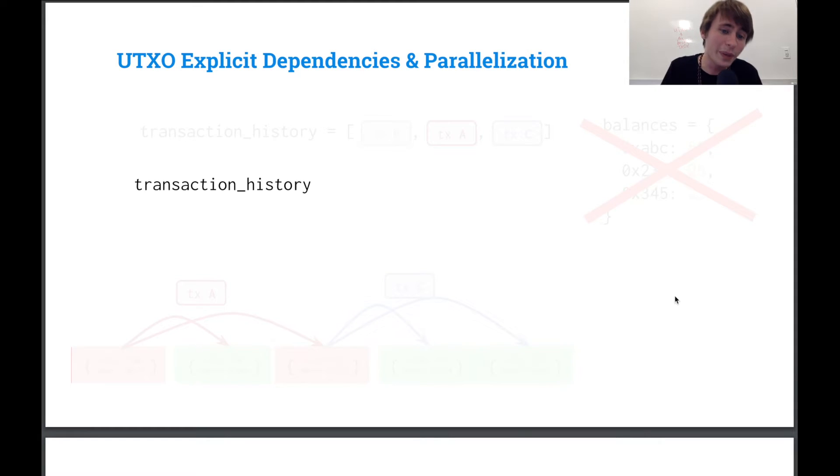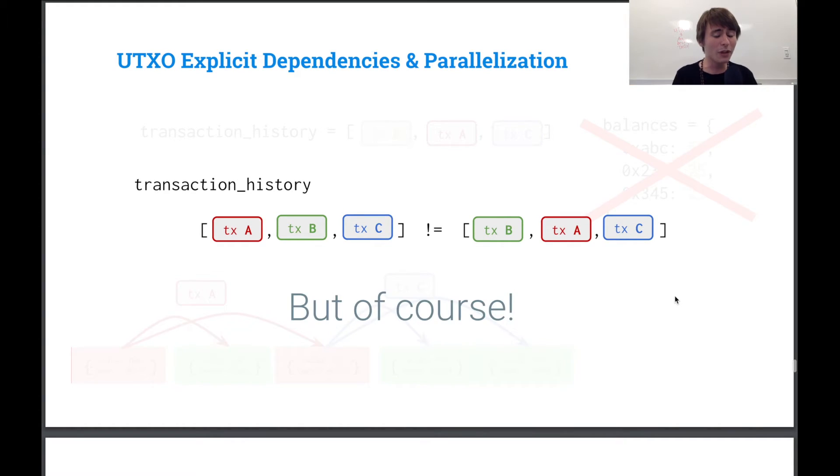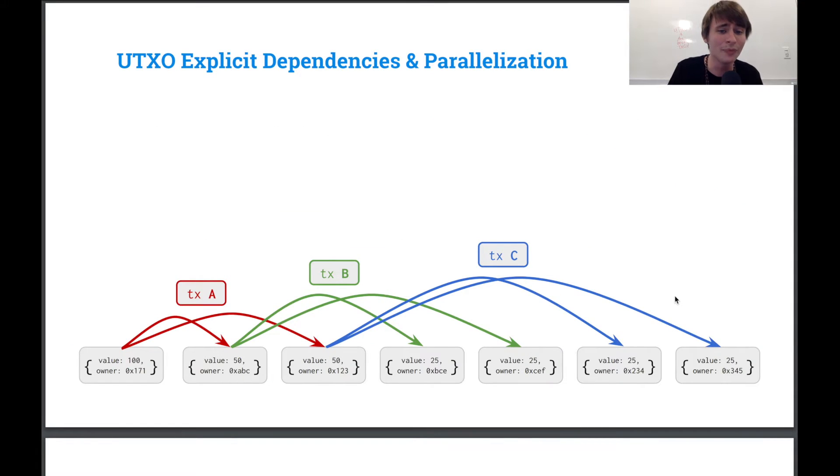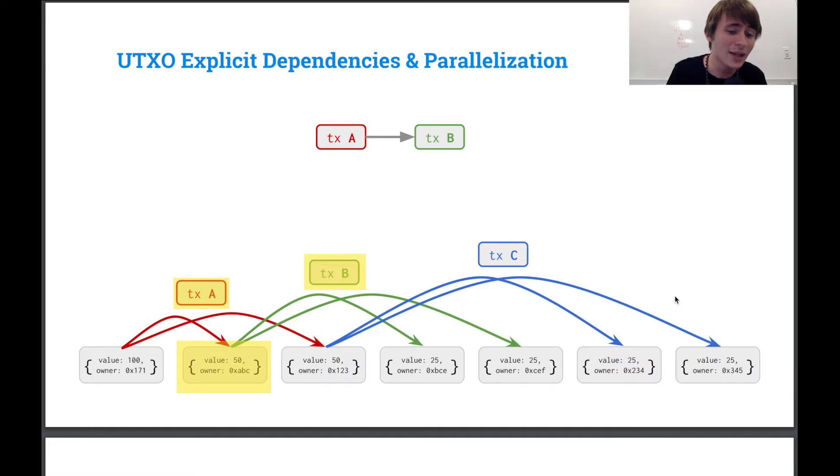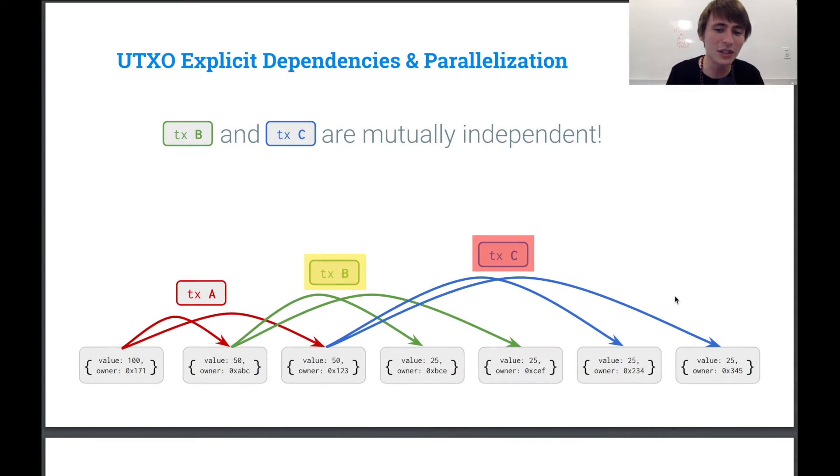That is not good. So we can say that transaction history A, B, C is really just not equal to transaction history B, A, C. But of course, it kind of makes sense. And why does it make sense? Well, B actually relies on transaction A having been run, right? B is spending a UTXO that transaction A generated. So B depends on A.